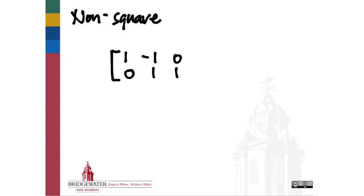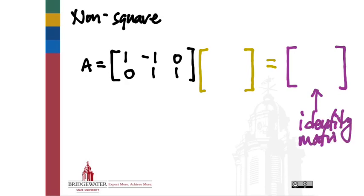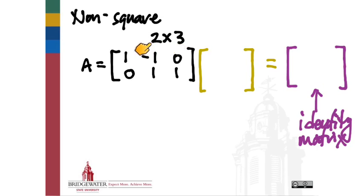Here's an example of a non-square matrix A: [1, -1, 0; 0, 1, 1] — it has more columns than rows. If I want to cancel this matrix out by multiplying by something, what would be the matrix equivalent of the empty tangle? The identity matrix. Canceling out a matrix means leaving an identity matrix behind. This is not a square matrix, so we have to be careful about dimensions. We've got two rows and three columns. The identity matrix on this side will have two rows, and since every identity matrix is square, it will be 2×2.